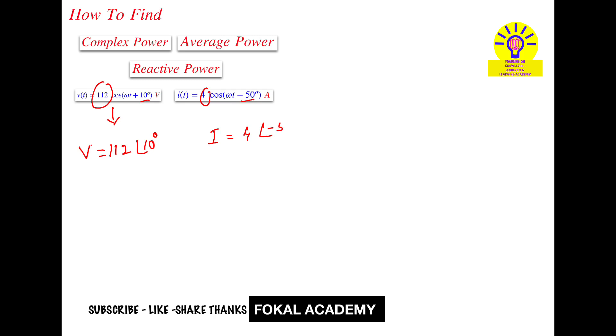And current I = 4∠-50°—amplitude is 4 and phase angle is minus 50 degrees. So these are the corresponding phasor forms for voltage and current. Now, first of all, find the complex power.